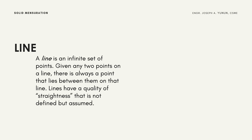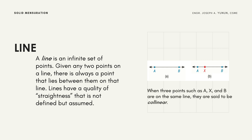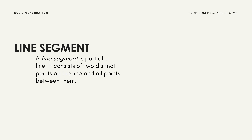A line is an infinite set of points. Given any two points on the line, there is always a point that lies between them. Lines have a quality of straightness that is not defined but simply assumed. If points such as A, X, and B are on the same line, they are said to be collinear. A line segment is a part of a line consisting of two distinct points and all points between them, as shown in the figure with line segment AB and C.